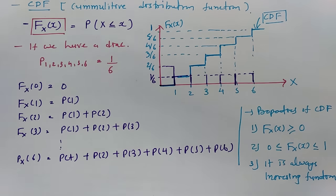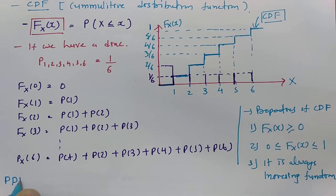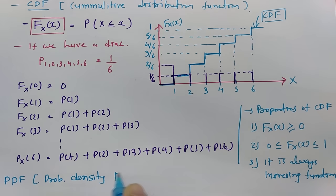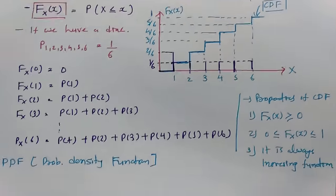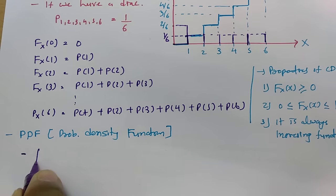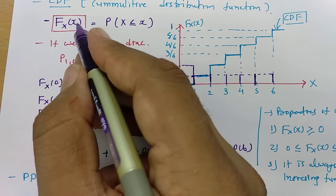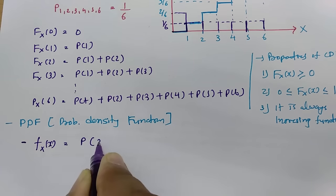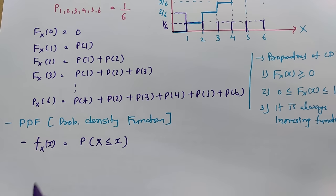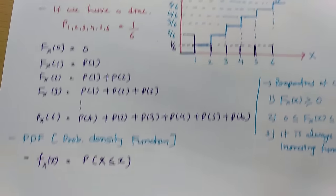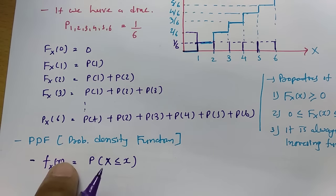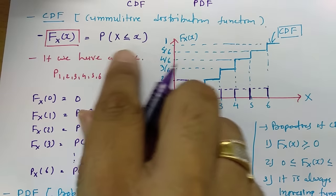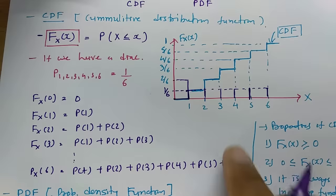Now I will explain PDF, probability density function. First, how to denote it: small f(x). The notation for CDF is capital F(X) and for PDF it is small f(x). In PDF you will have the magnitude of probability, whereas in CDF you will have the cumulative addition of probability.